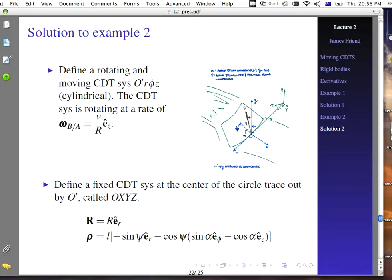So let's look at the solution here. If we define a rotating and moving coordinate system, O'R, phi, z. And we say that's cylindrical coordinate system, which makes sense because this O prime point is going to trace out a cylindrical direction. And O'R, phi, z actually is convenient for the cylindrical form. The coordinate system is rotating at a rate of omega B with respect to A.